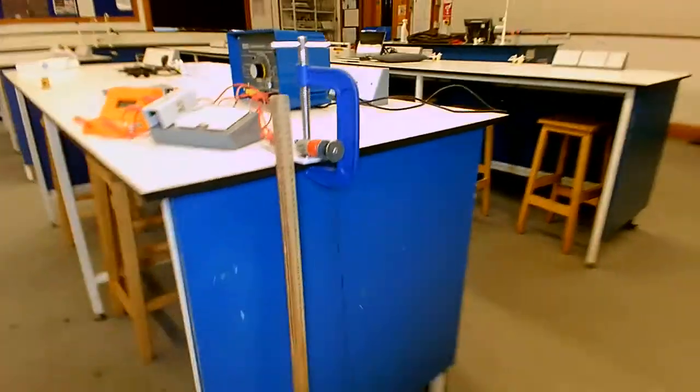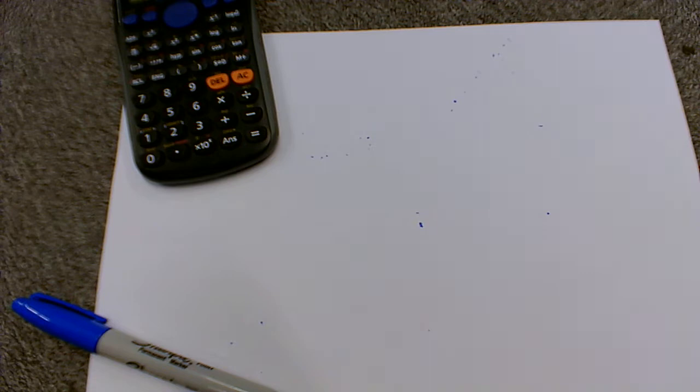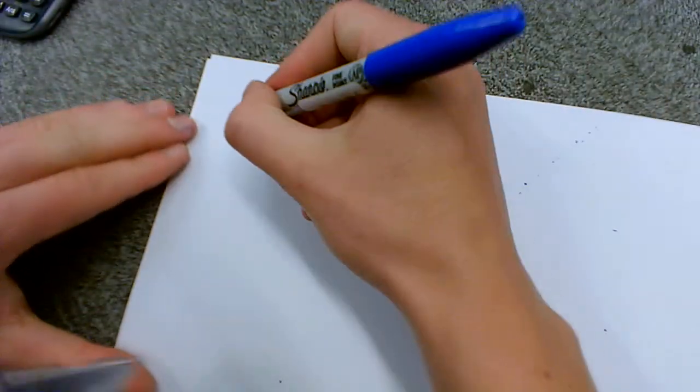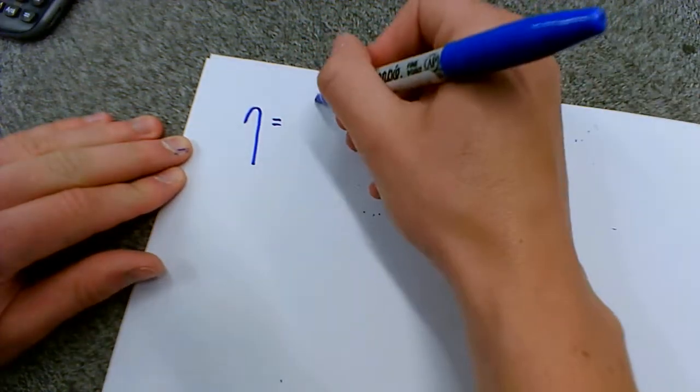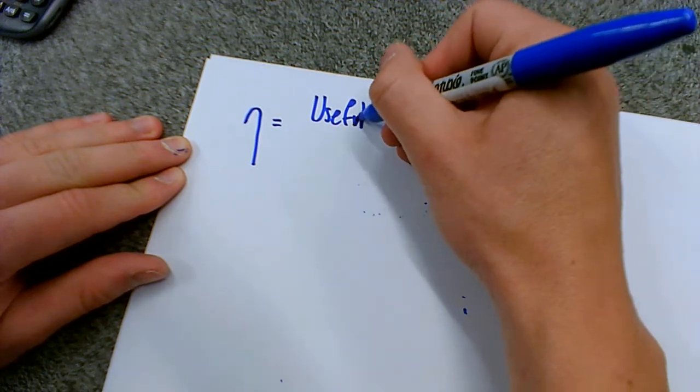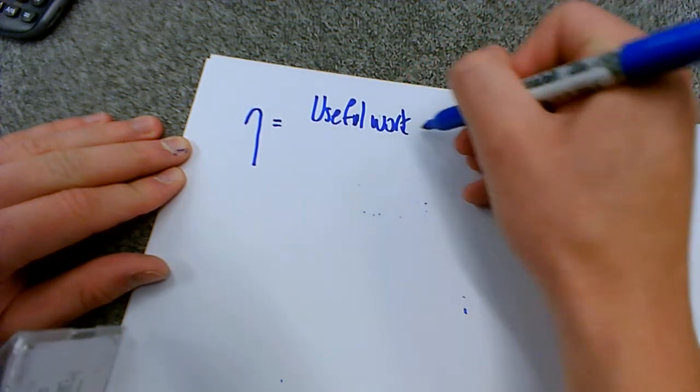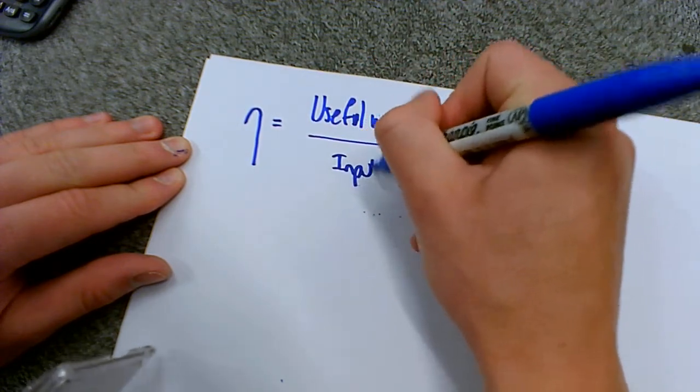So to calculate efficiency, if we dig into the theory a little bit to start off with, you can see I've got a setup down here on the floor. So in terms of how this is going to work, efficiency, which I use this symbol for, is the amount of useful work done over input energy.